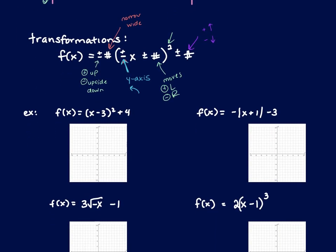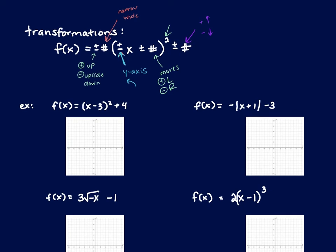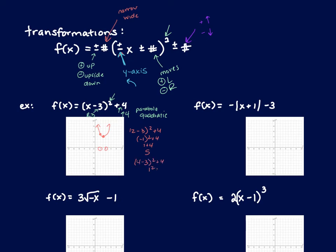The test asks you to identify the parent function, describe the shifts, and plot the new graph. For f(x) equals (x minus 3) squared plus 4: this is a parabola. The minus 3 inside says move right 3; the plus 4 outside says up 4. Plot the vertex at (3, 4) and draw the parabola. For exact points, plug in x equals 2: (2-3)² + 4 = 1 + 4 = 5, giving point (2, 5). Plug in x equals 4: (4-3)² + 4 = 1 + 4 = 5, giving point (4, 5). The parabola is symmetric, which confirms this.